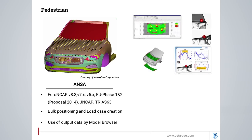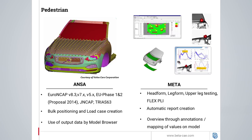Moving to Meta, a special toolbar developed for pedestrian safety analysis can treat head form, leg form, upper leg test, and flex ply analysis. The toolbar offers automatic report generation, but also mapping of values on the model can also take place.